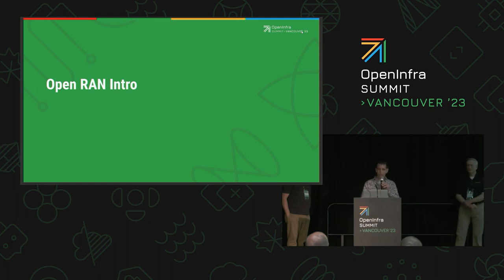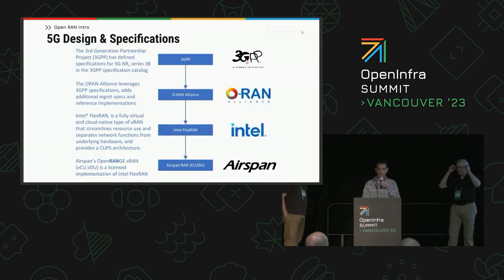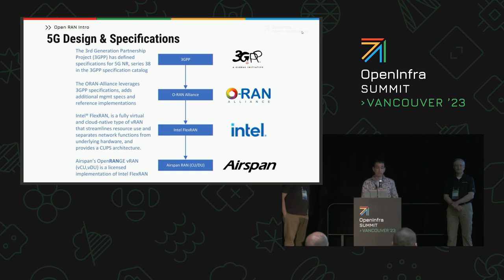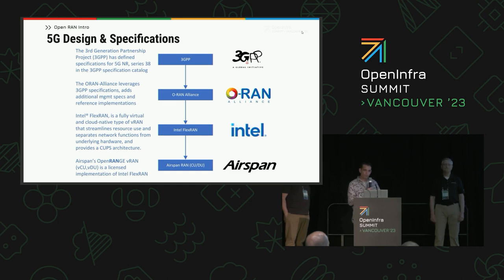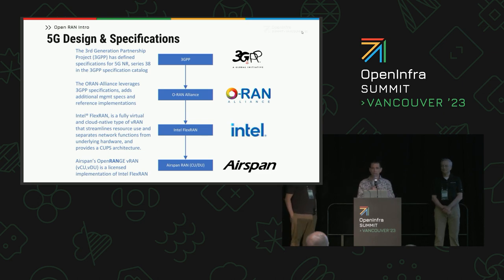Here's a high-level overview of Open RAN and how the specifications are defined. In this top-to-bottom flow: 3GPP defines the base specifications. Downstream is the O-RAN Alliance, which takes those 3GPP specifications and further defines them, producing a reference implementation. Intel then took the O-RAN Alliance output and created Intel FlexRAN, building upon the work done in 3GPP and O-RAN Alliance.